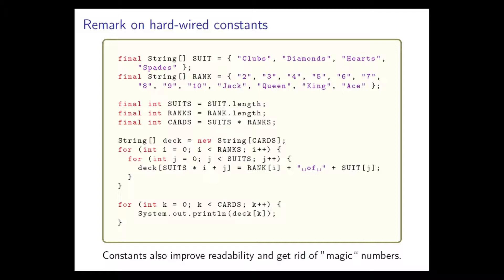Using final can be a useful way to improve readability by getting rid of magic numbers. Instead of the number 52, we've got the final int cards, calculated as the length of the array suit multiplied by the length of the array rank. This gives the reader of the program a better idea about the role of that number 52. If that number is used multiple times in the program and later needed to be changed, there would only be one place to change it. However, that argument loses force here precisely because we've argued that the number never should be changed in the lifetime of the program.